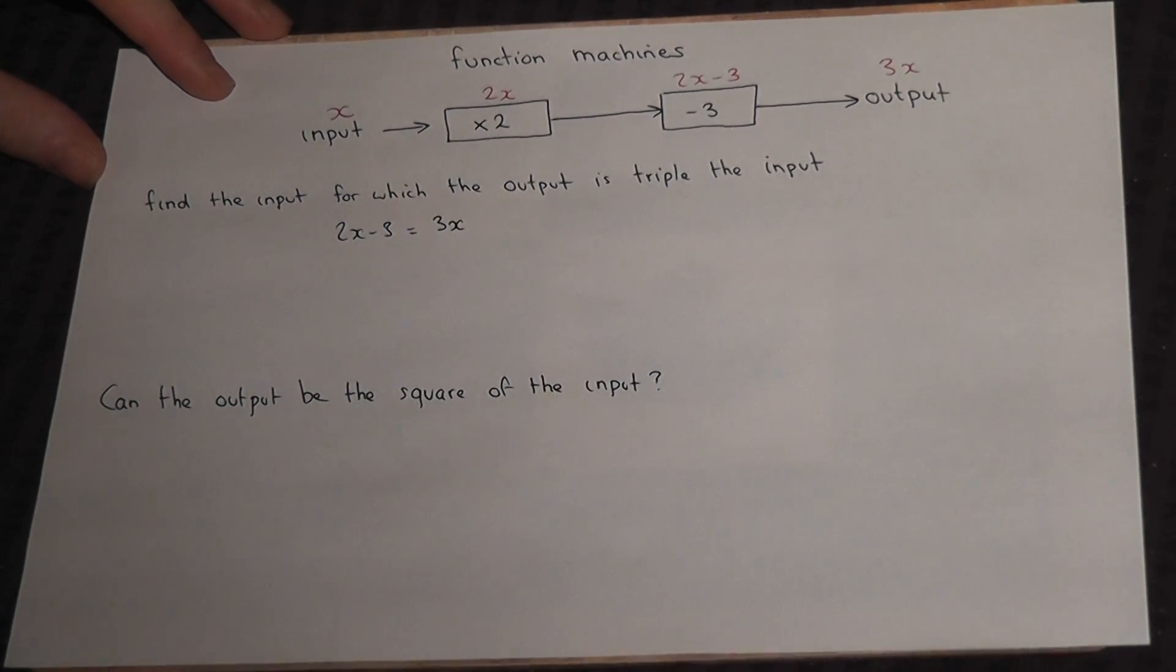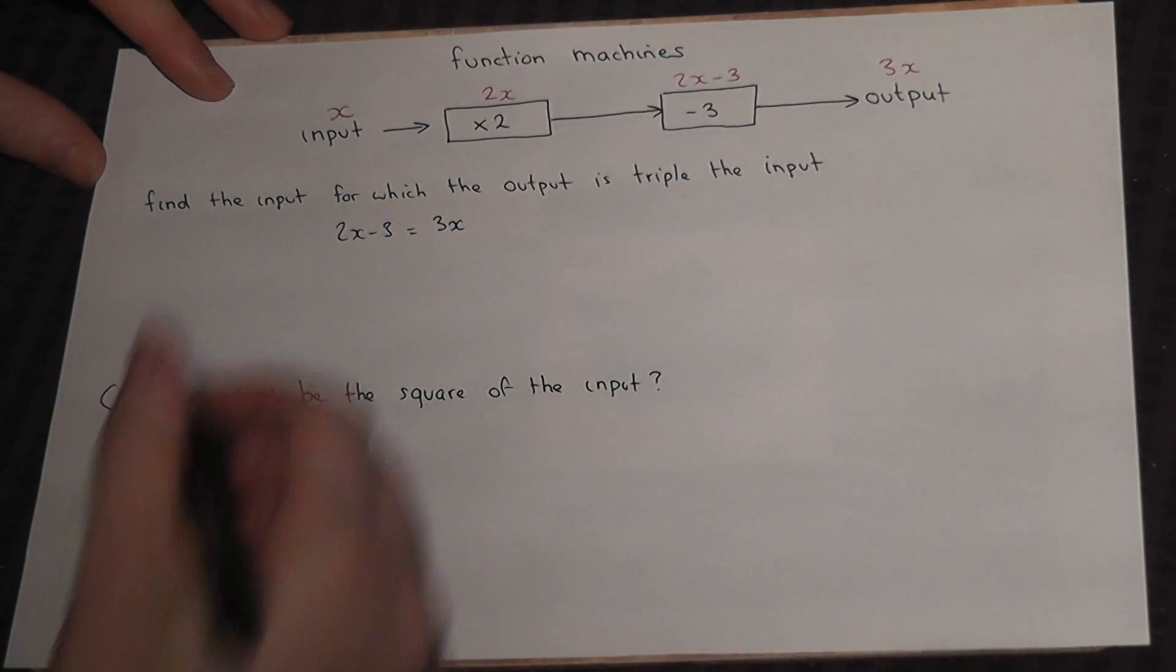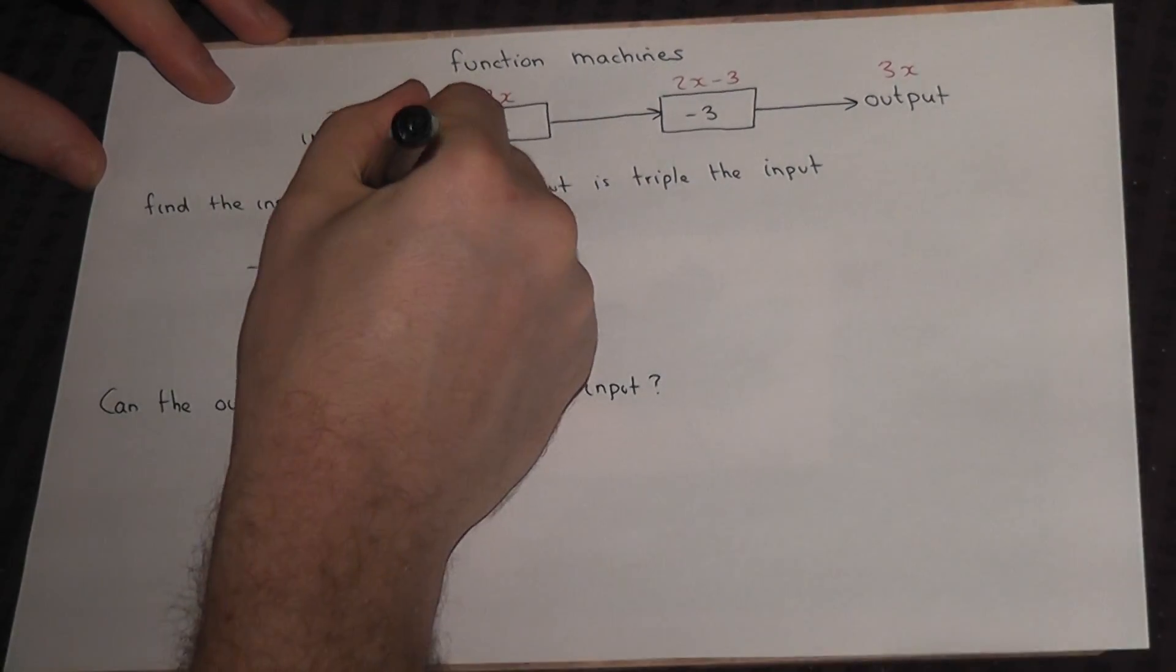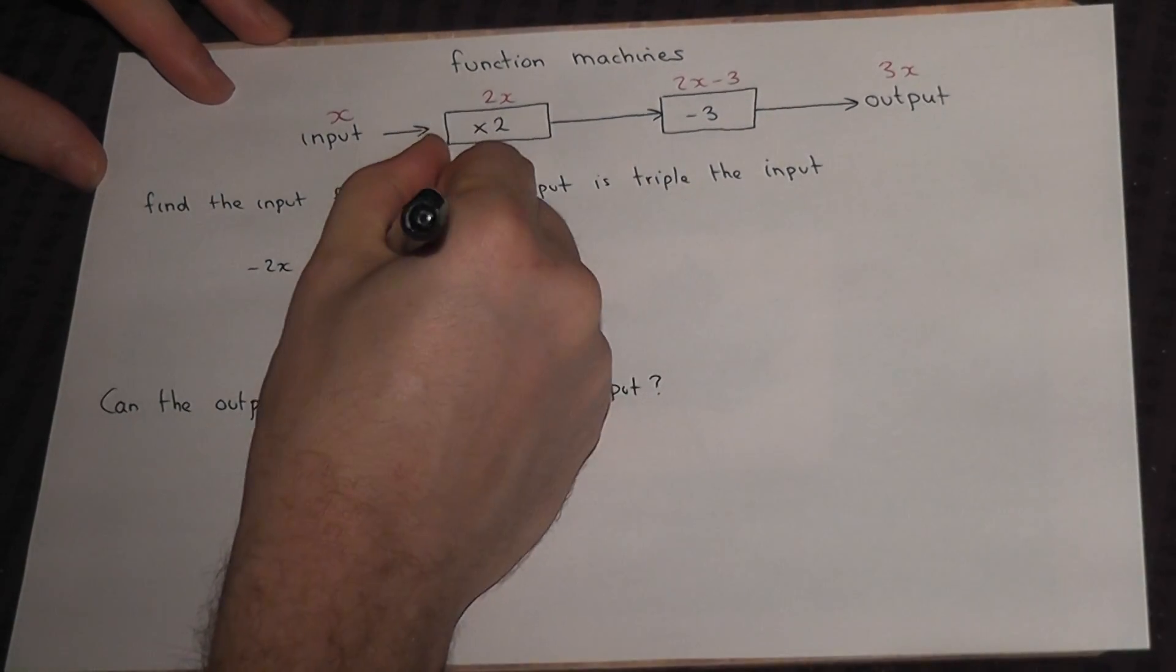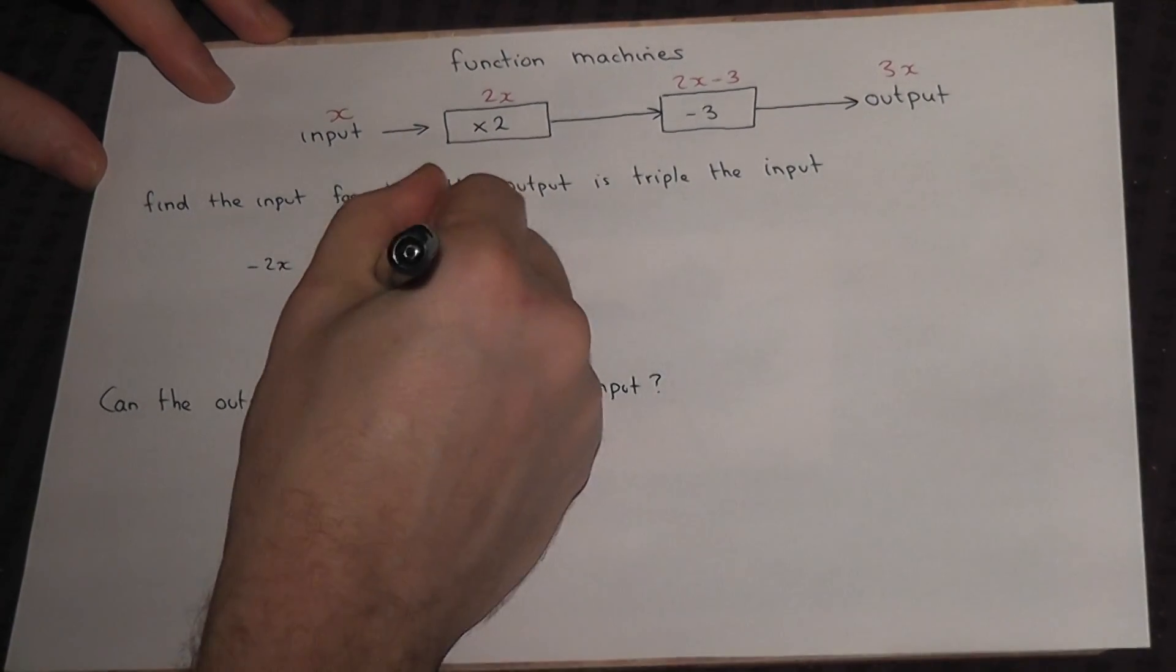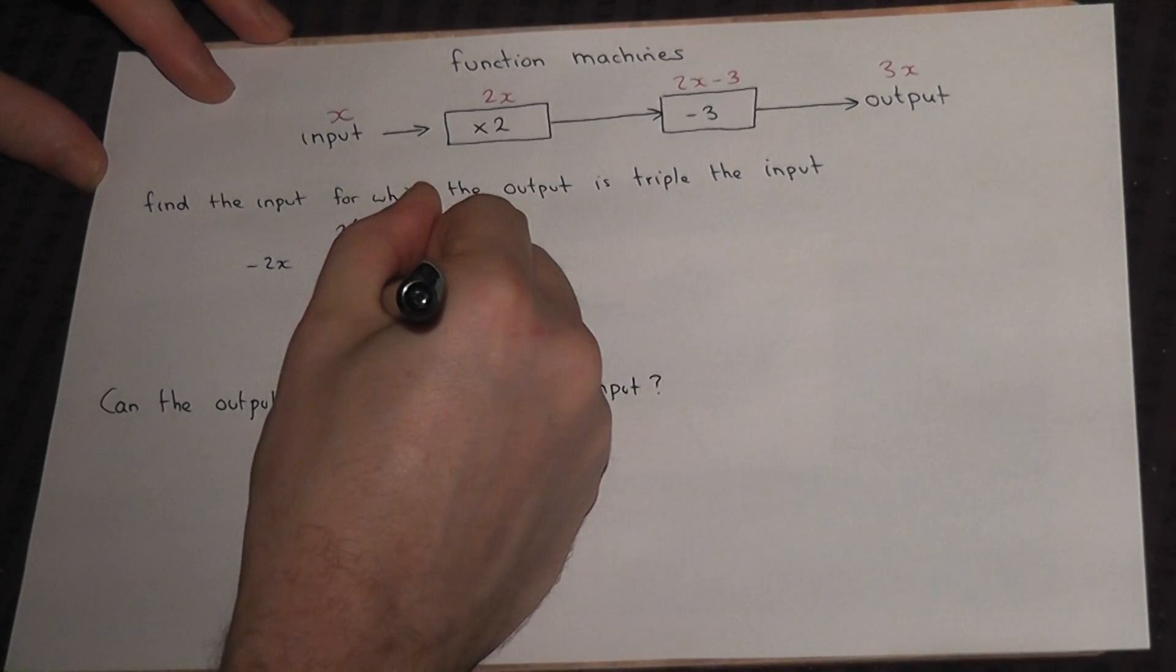Now to solve this, we would take away 2x from both sides, which leaves us with minus 3 equals x. So x is equal to minus 3.